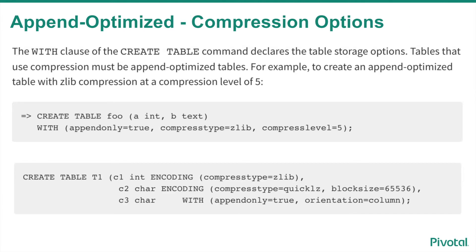To apply compression to an entire append-optimized table, use the compress type clause. You can also use the encoding clause to specify a compression type on a per-column level.